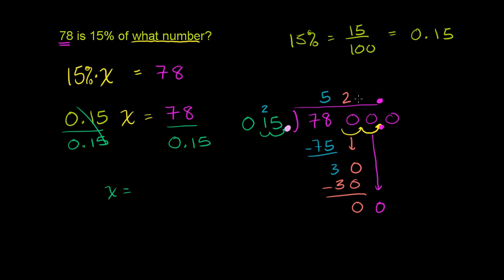15 goes into 0. 0 times 15 is 0. Subtract, no remainder. So 78 divided by 0.15 is exactly 520. So x is equal to 520. So 78 is 15% of 520.